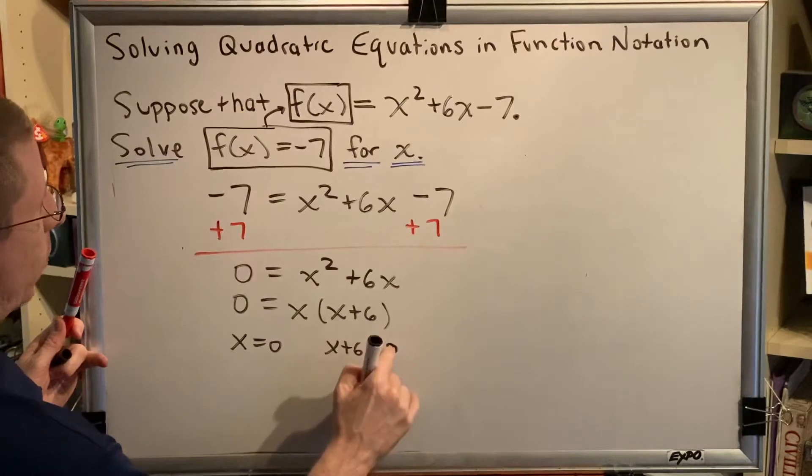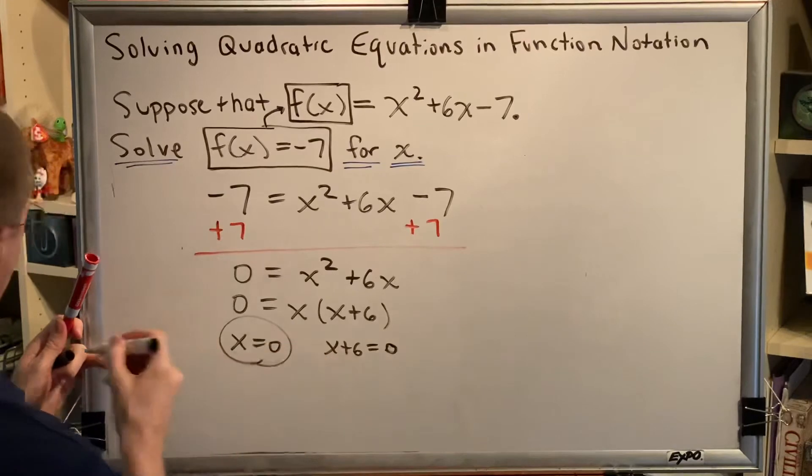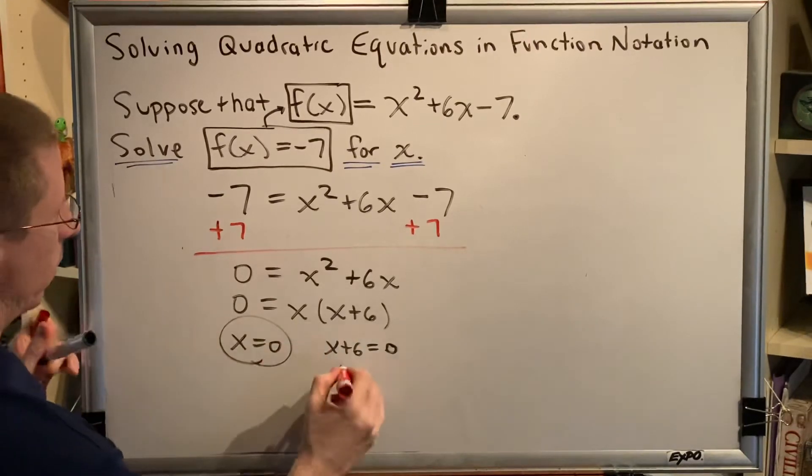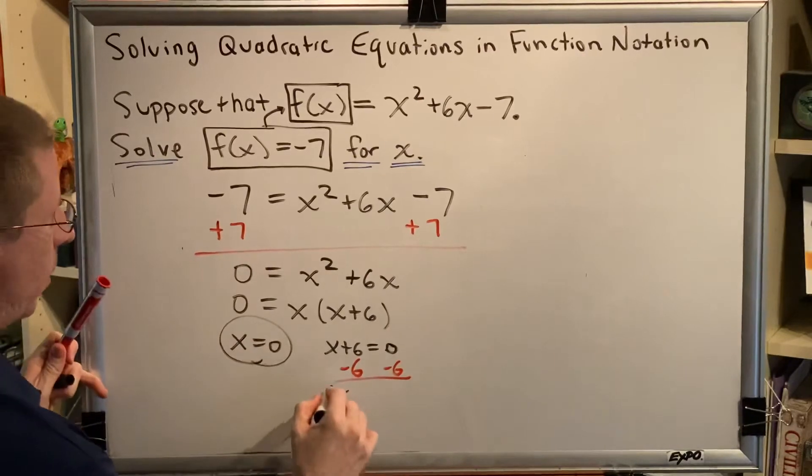So we'll set them both to be equal to 0. This one, there's no algebra involved. We just get x is 0. This one, we subtract 6 on both sides. And we get x is equal to negative 6.